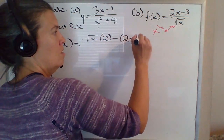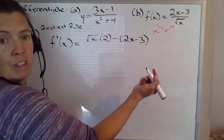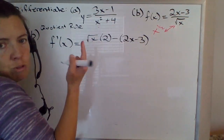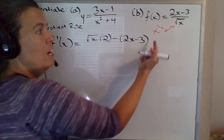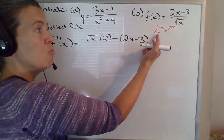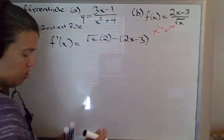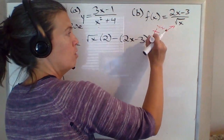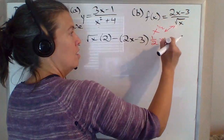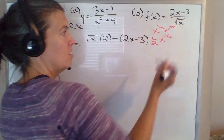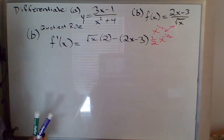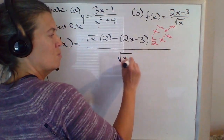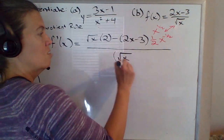Minus the top function times the derivative of the bottom. When I'm taking a derivative, it's more convenient to think of it as x to the 1 half so I can use the power rule. So derivative of the bottom — the 1 half will come down and subtract 1 from the exponent, so that's x to the negative 1 half power. All over the bottom, so I'm going back to thinking of it as square root of x, squared.